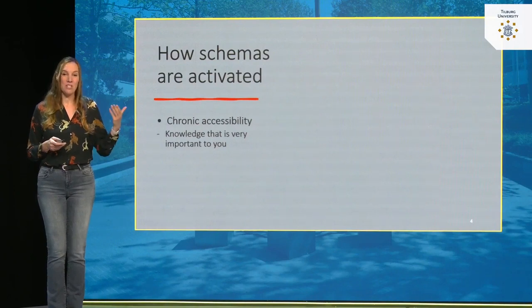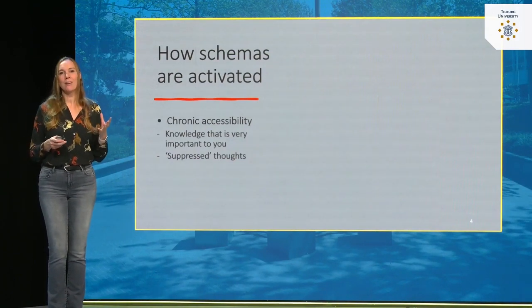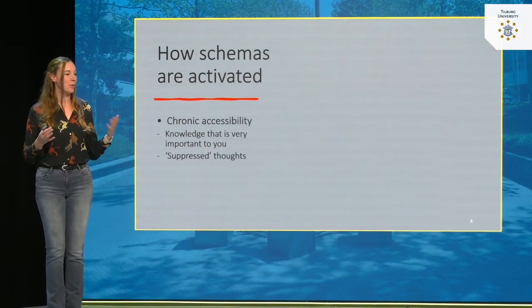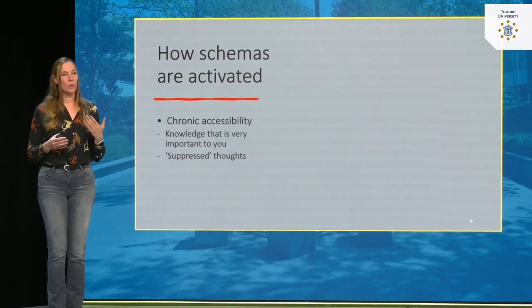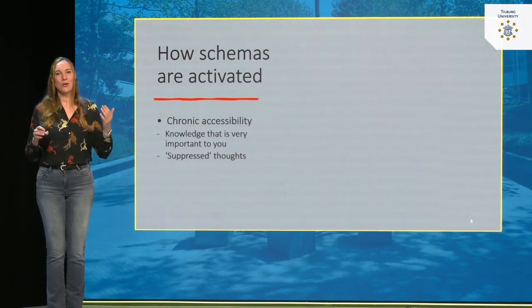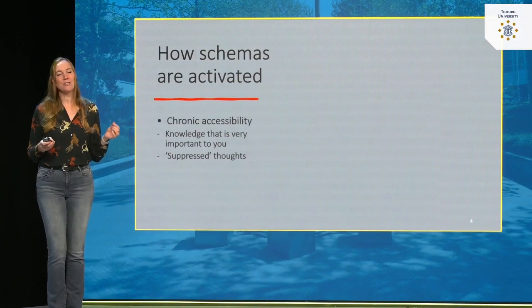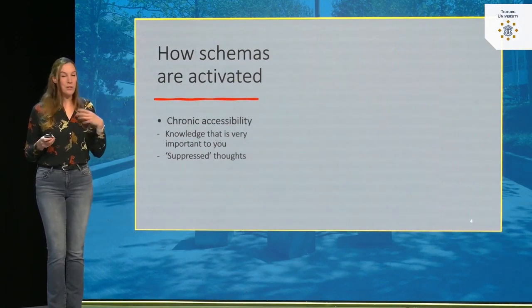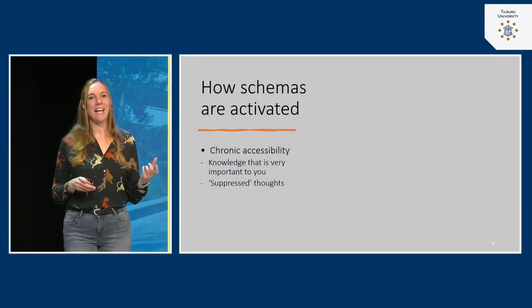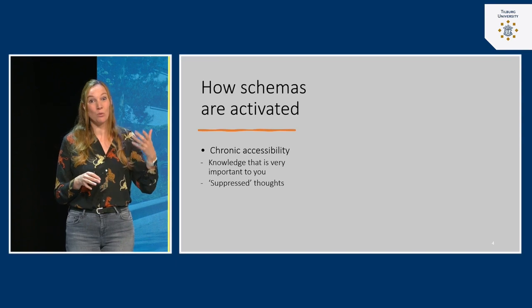Interestingly, one type of information that also becomes easily accessible is when we try to suppress a thought — which is somewhat ironic. When we're very interested in forgetting something, for example lying in bed worrying about an upcoming exam and telling yourself 'stop thinking about the exam,' it probably doesn't help. The moment we try to suppress thoughts — especially when we're tired — this is very effortful, and ironically those thoughts become highly accessible and very active.